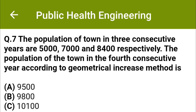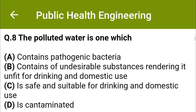The population of a town in three consecutive years is 5,000, 7,000, and 8,400 respectively. The population of the town in the fourth consecutive year according to the geometrical increase method is: option A: 9,500, option B: 9,800, option C: 10,100, option D: 10,920. The correct answer is option D: 10,920.